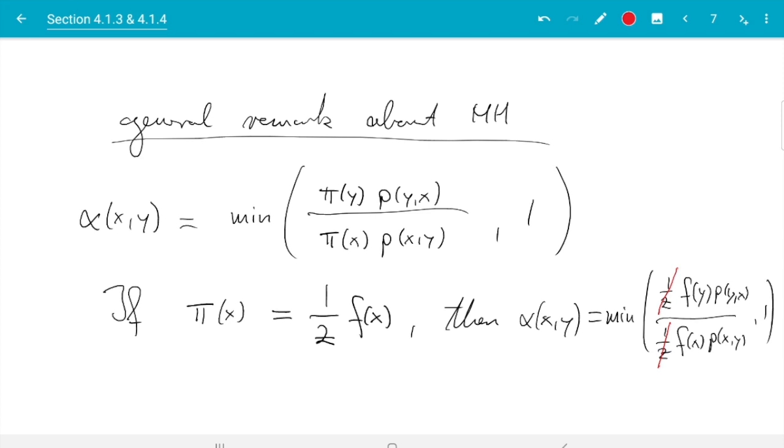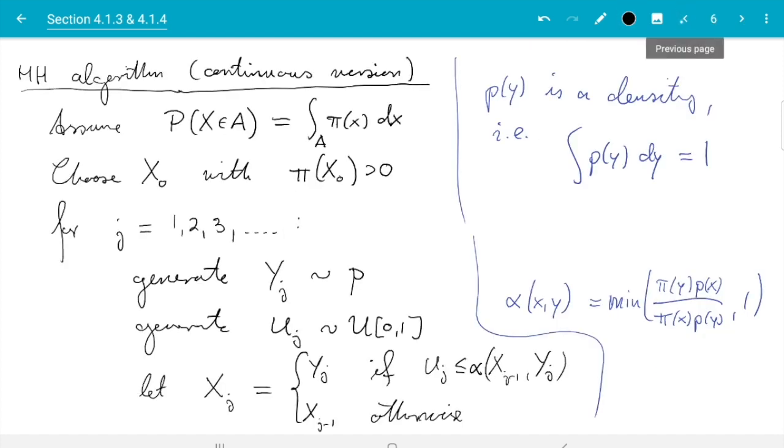Similar to rejection sampling we discussed earlier, the Metropolis-Hastings method in all variants can be used if we don't know the normalizing constant. Instead of π, we can just use the unnormalized density, the thing I called f here, and the method will still work because in this fraction, the constants cancel out. That applies to all variants.